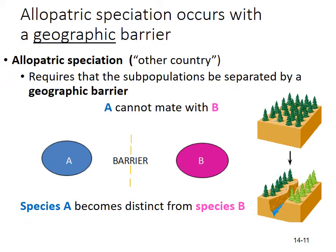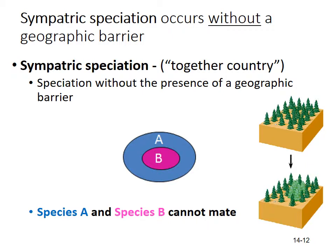Sympatric speciation means speciation occurs without the presence of a geographic barrier — 'sympatric' means 'together country.' In this case, species A and species B are in the same area, but something occurred and species B can no longer mate with species A.